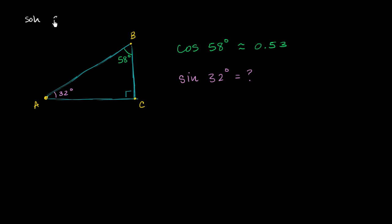SOHCAHTOA is opposite over hypotenuse. Cosine is adjacent over hypotenuse. Tangent is opposite over adjacent.